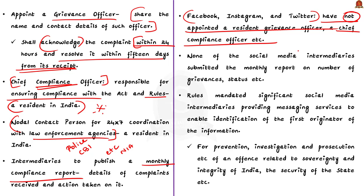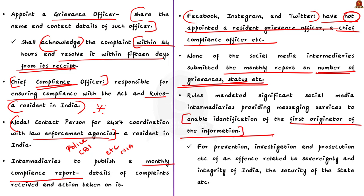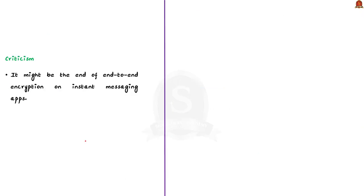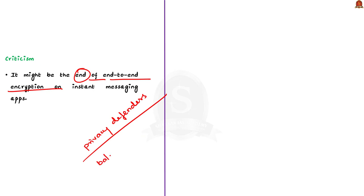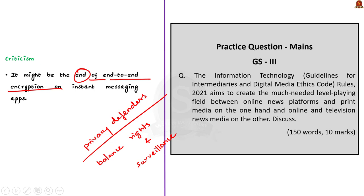Under the 2021 rules, the IT ministry asked all significant social media platforms to submit a monthly report on the number of grievances filed against content on their platform, how many were taken up, and the status of the rest. The rules also mandated that significant social media platforms providing messaging services shall enable identification of the first originator of information — applicable for prevention, investigation and prosecution of offenses related to sovereignty and integrity of India and the security of the state. This provision drew attention from privacy activists calling it the end of end-to-end encryption on instant messaging apps. In conclusion, the government shall go for a balance between regulating obnoxious online content and preserving constitutional values and freedom of expression.